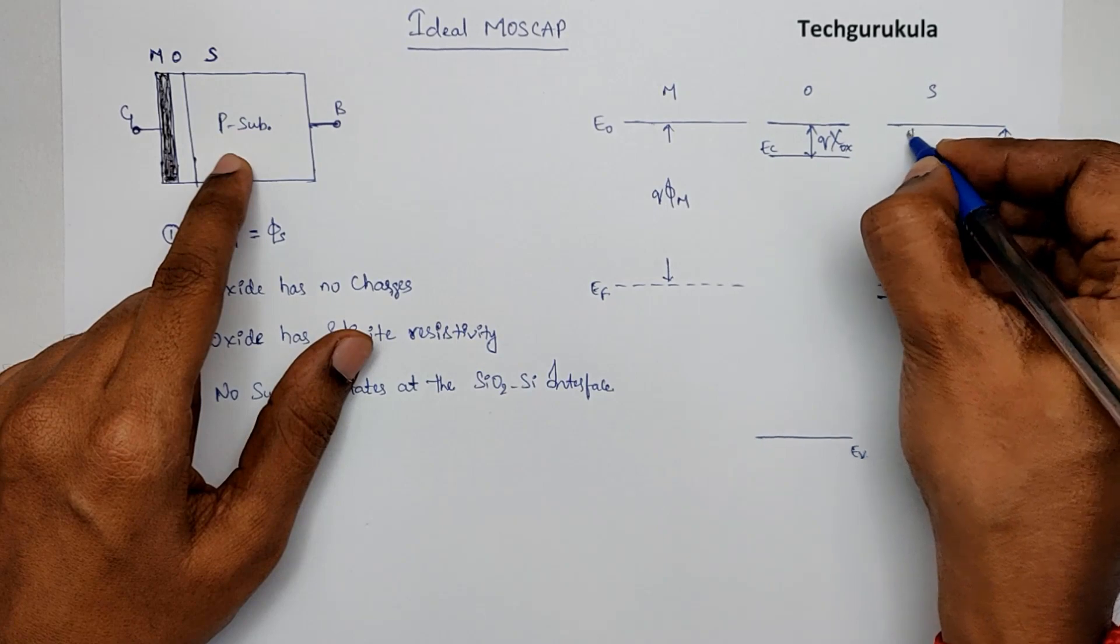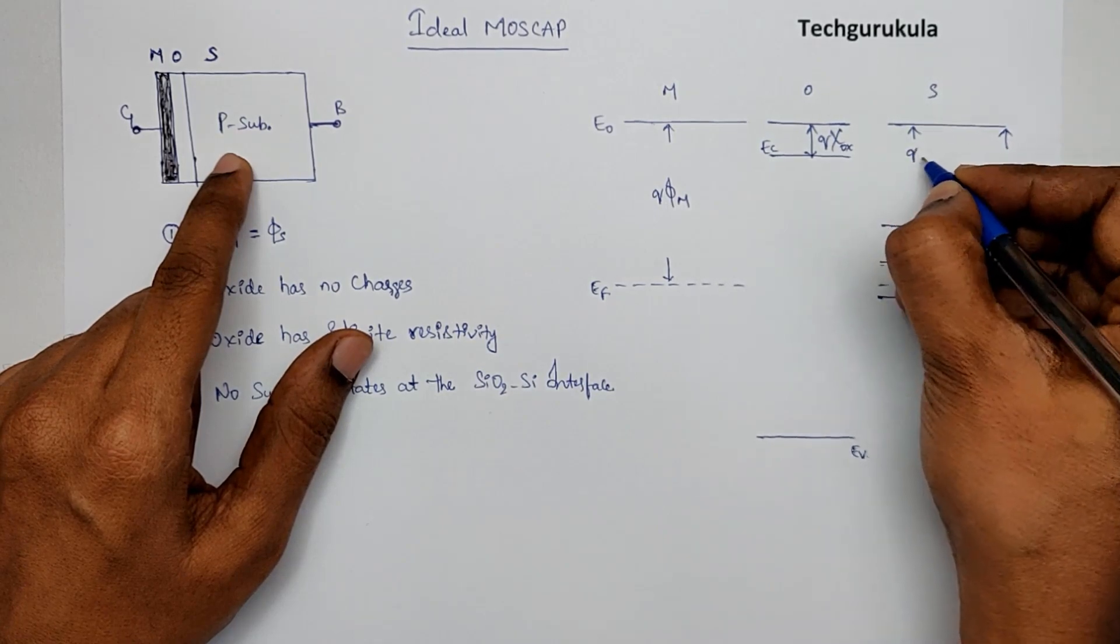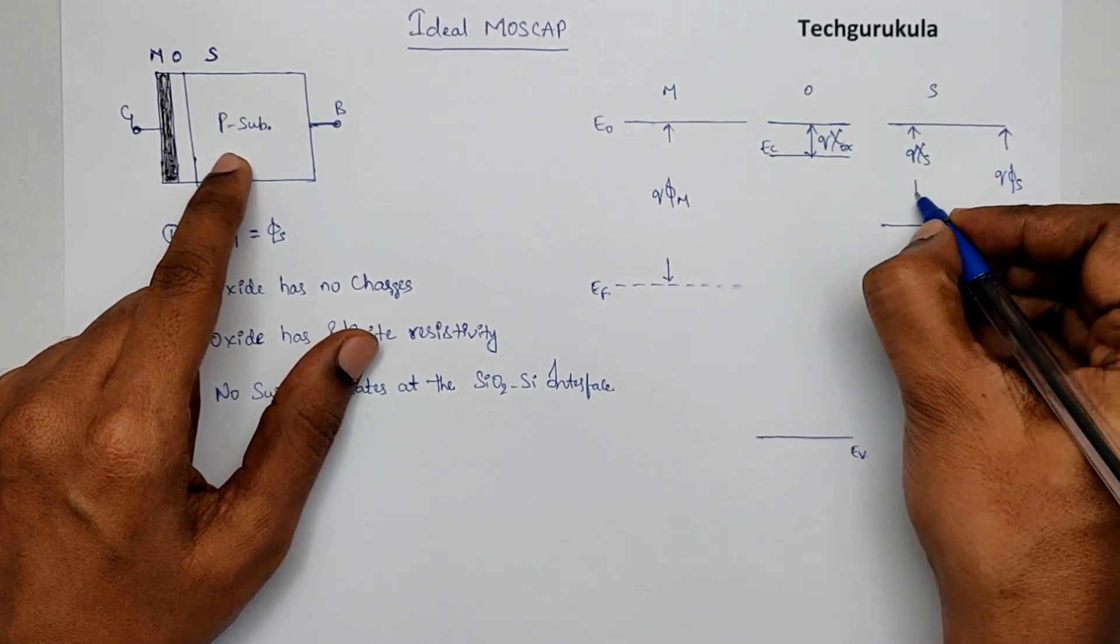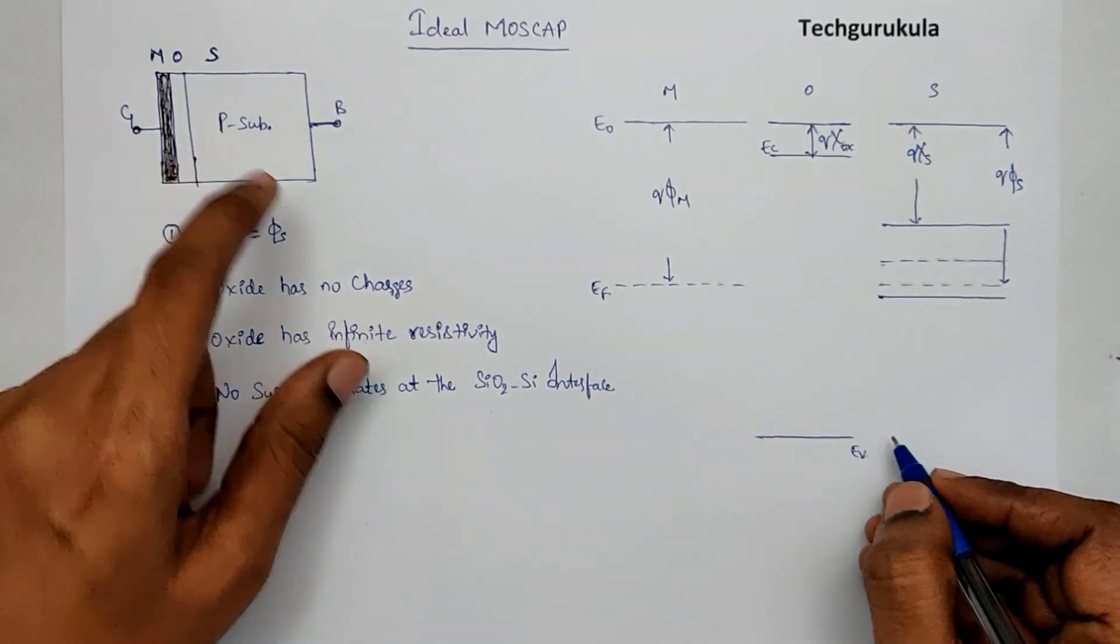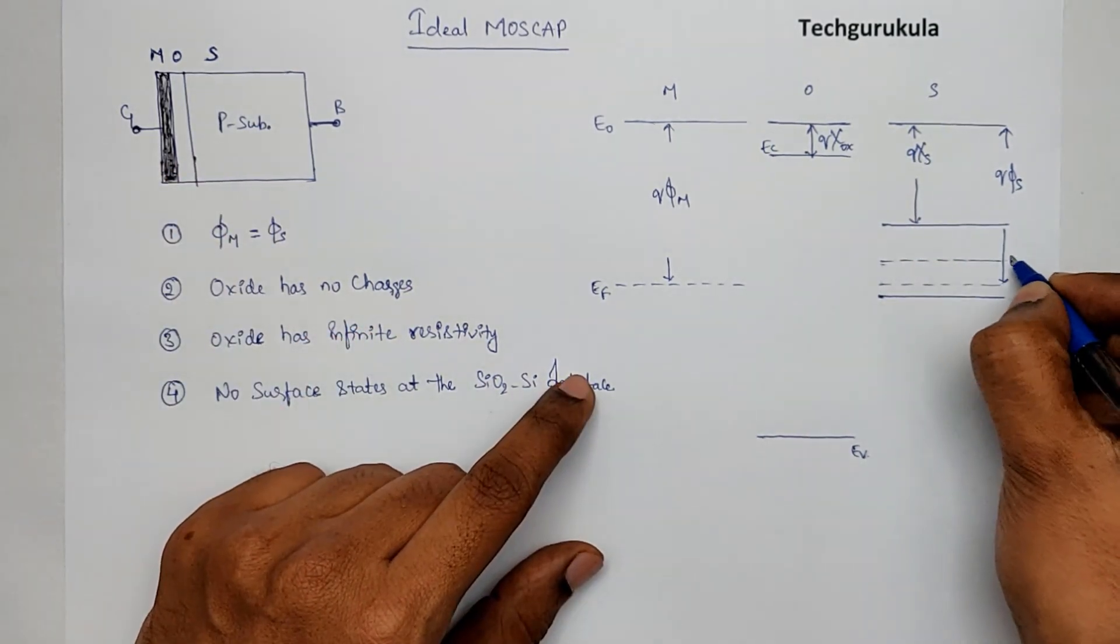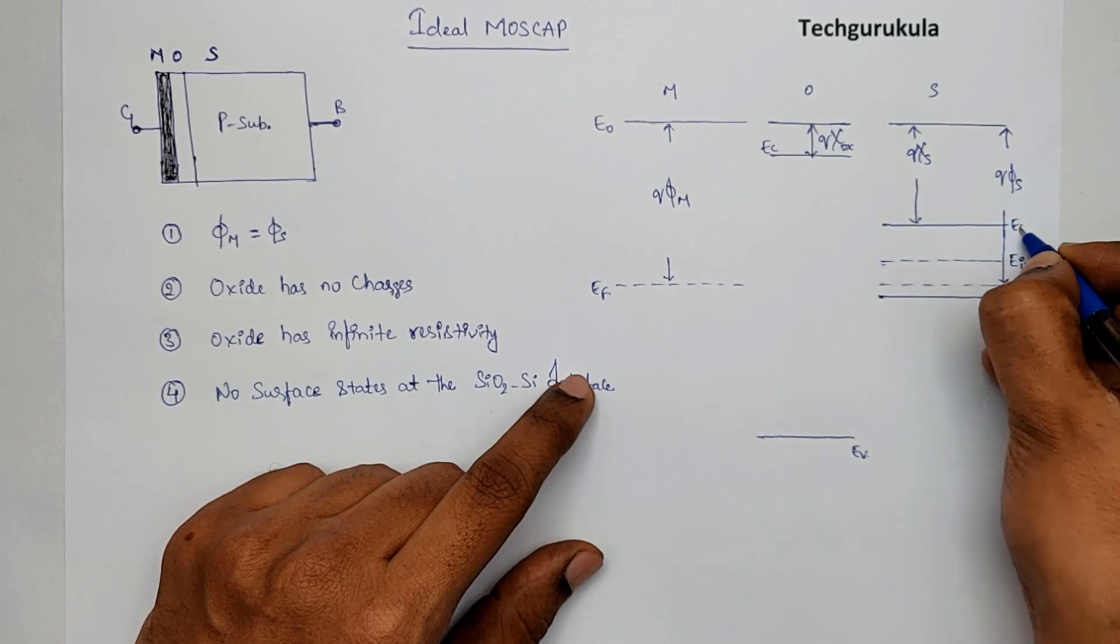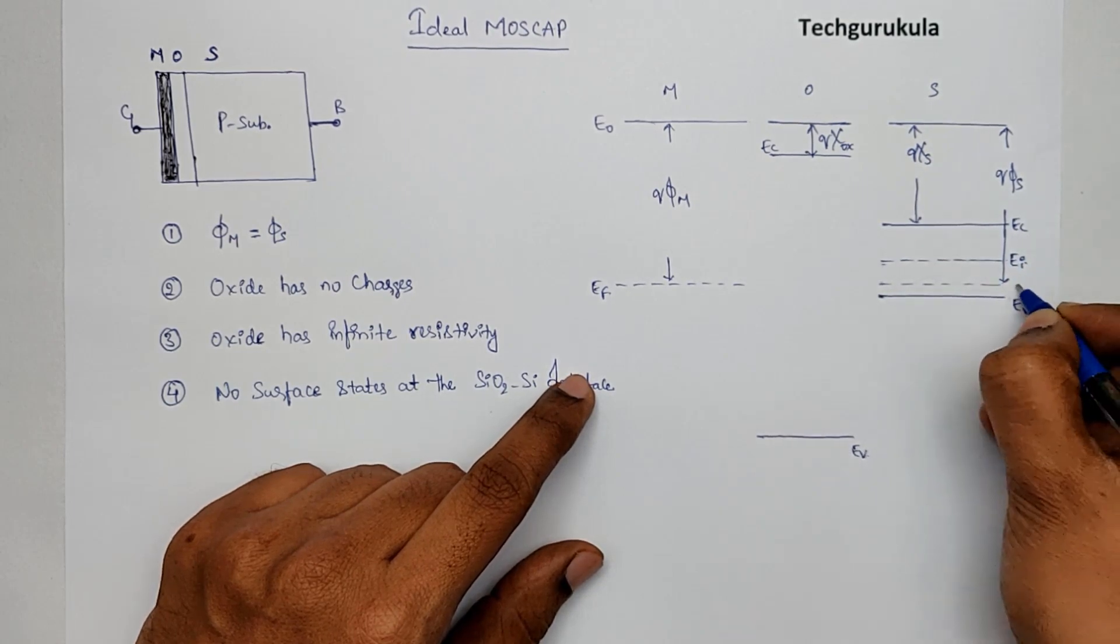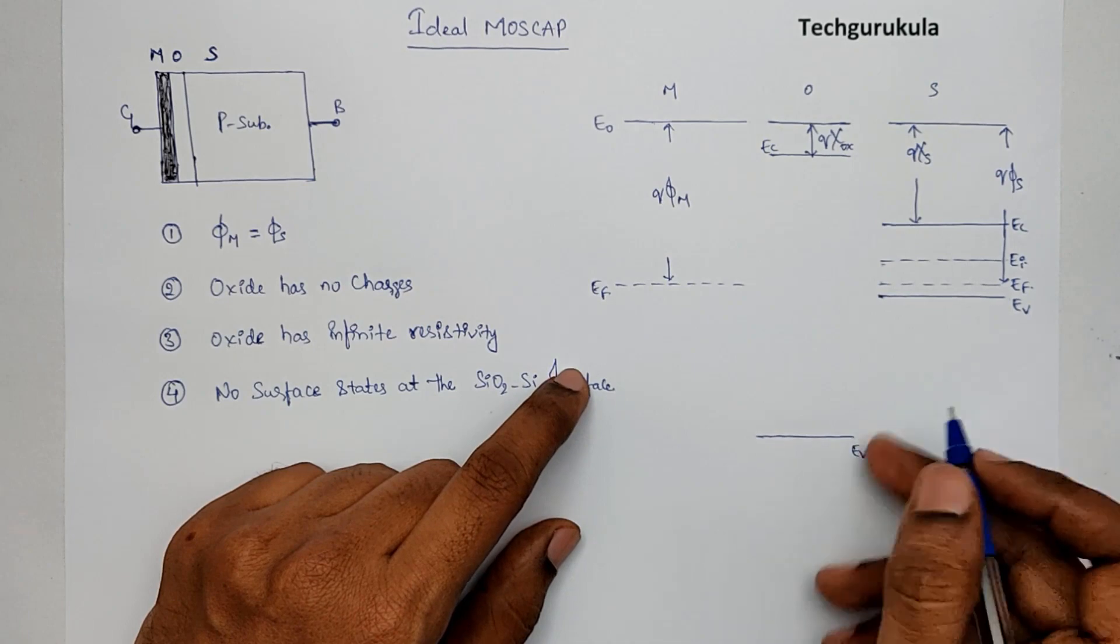Now, as we have seen in last time, that Q times chi silicon or semiconductor is this value. And, in fact, this is EI, this is EC, EV, and EF.